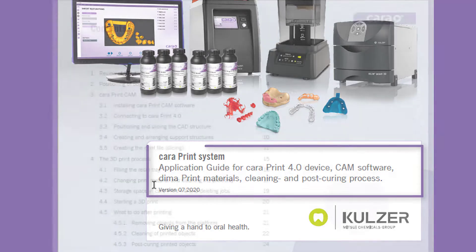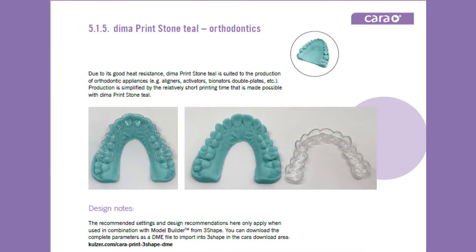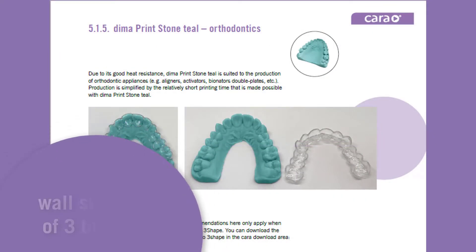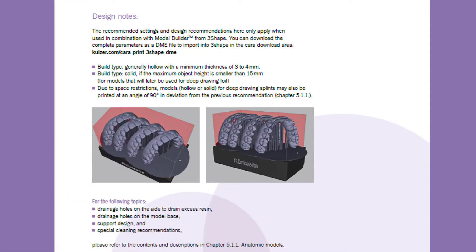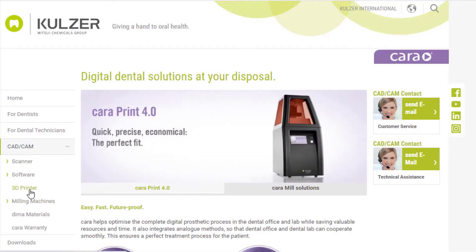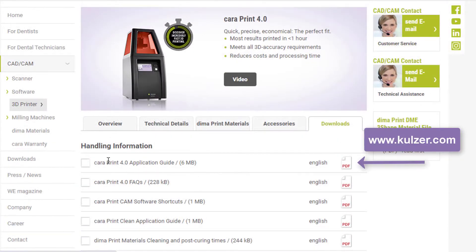DEMA print stone teal needs a wall thickness of three to four millimeters. Models that will be later used for deep drawing foil with a maximum height of 15 millimeters can also be printed without hollowing. Since the application guide is adapted for new materials, you will find this in the current version in the download area of our website or under the following direct link.